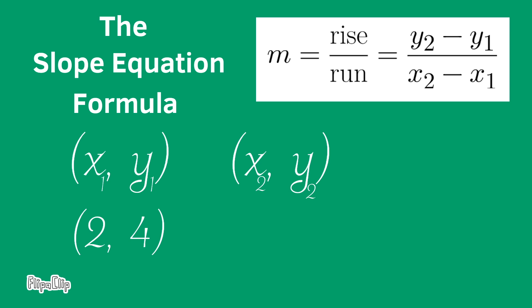For this example, let's say that the first set of coordinates have the x and y values of 2 and 4. The x value is 2, the y value is 4. And the second set of coordinates has the x value of 6 and the y value of 8. Let's use the slope equation formula to find the slope of this line.